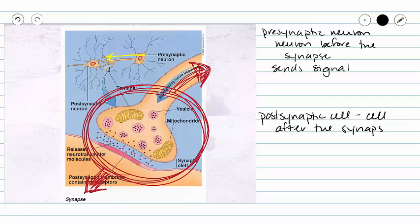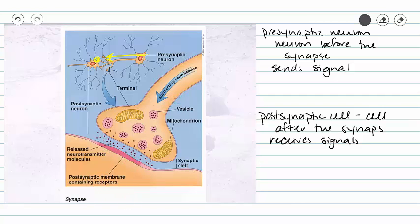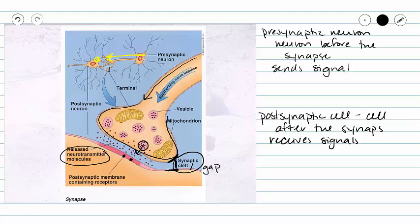And our postsynaptic cell is going to receive those signals. So if we erase all of those scribbles I drew, we can see this vocabulary at work. Our presynaptic neuron sends an action potential down the axon to our synaptic knob. This is our presynaptic membrane. That action potential causes neurotransmitters to be released into the synaptic cleft. The synaptic cleft or synaptic gap is the space between the presynaptic membrane and the postsynaptic membrane. These neurotransmitters are then going to bind onto receptors on our postsynaptic membrane and stimulate this postsynaptic cell to do something.